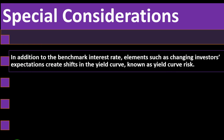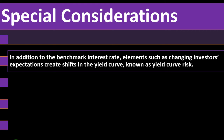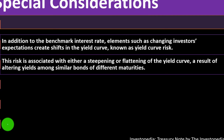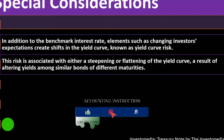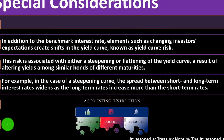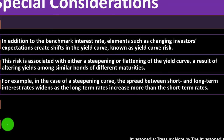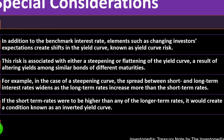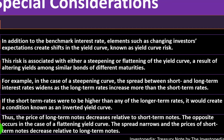Special considerations: in addition to the benchmark interest rate, changing investor expectations create shifts in the yield curve, known as curve risk. This risk is associated with either a steepening or flattening of the yield curve, resulting from altering yields among similar bonds of different maturities. In a steepening curve, the spread between short and long-term rates widens. If short-term rates exceed long-term rates, it creates an inverted yield curve, causing long-term note prices to decrease relative to short-term notes. In a flattening curve, the spread narrows and short-term note prices decrease relative to long-term notes.